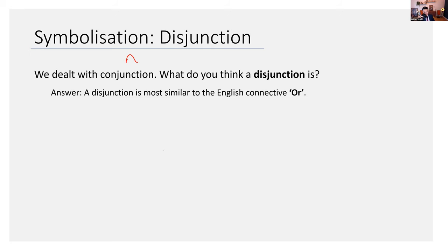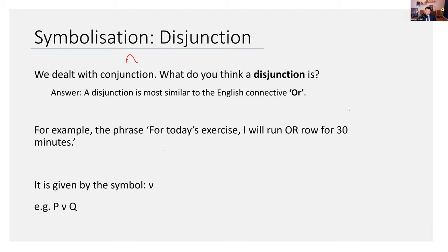A disjunction is most similar to the English connective or, but they're not exactly the same. Take the following example. For today's exercise, I will run or row for 30 minutes. Disjunction is given by this symbol, the V. If running was P and rowing was Q, then we might symbolize the above by P disjunction Q, where disjunction is like this V thing.